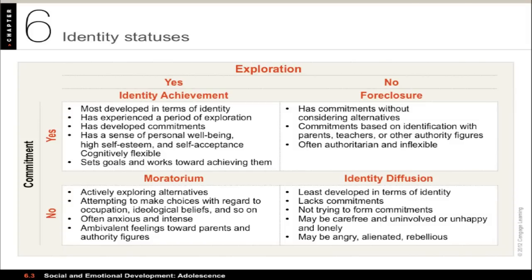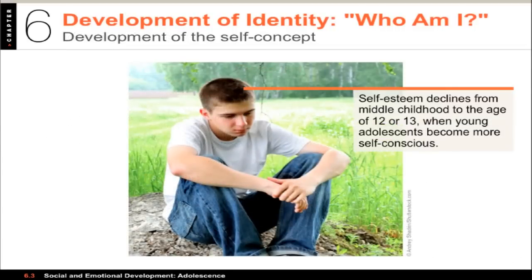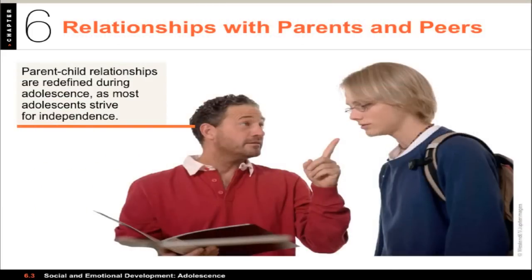Adolescents tend to shift toward either the moratorium and achievement statuses during the high school and college years. Identity development relates to relationships and occupational choices, among other matters. An extended part of identity development has to do with self-esteem. Younger children tend to describe themselves mainly in terms of physical characteristics and actions, but near adolescence, children begin to add psychological characteristics and social relationships to their self-description — things that become more abstract. Self-esteem tends to decline from middle childhood to around age 12 or 13 because young adolescents are becoming more self-conscious.